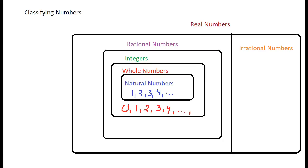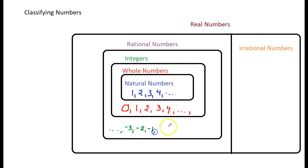Around fourth grade or so, you were introduced to integers. Integers have positive numbers and negative numbers, and they include zero. So: dot dot dot, negative three, negative two, negative one, zero, and then positive numbers one, two, three, and so on. Those are the integers.